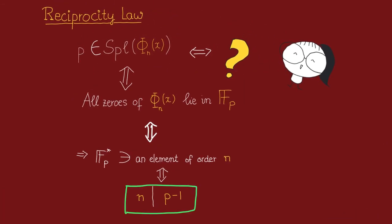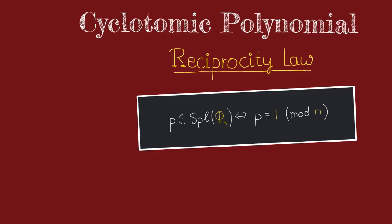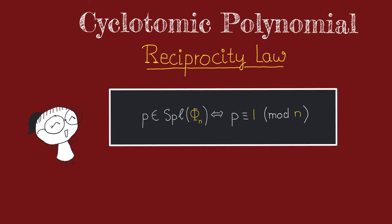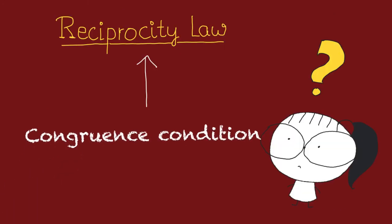Thus now coming back to our story, we see that we have found a congruence condition. Thus we see that the n-cyclotomic polynomial split over p if and only if n divides p minus 1. In other words, our reciprocity law for the case of cyclotomic polynomial is given by a congruence condition modulo n. Up next we ask if reciprocity law can always be given by a congruence condition.